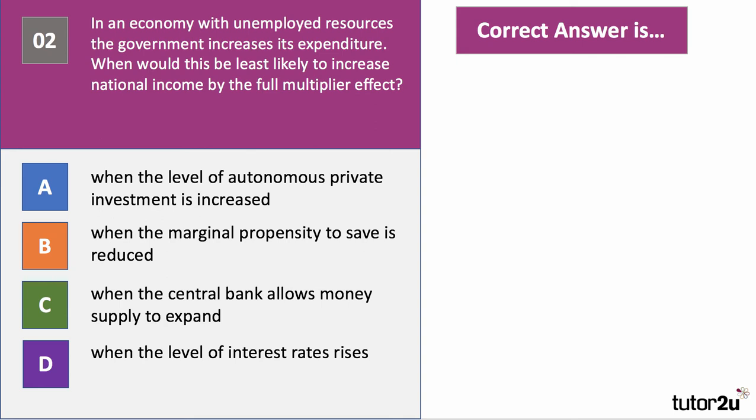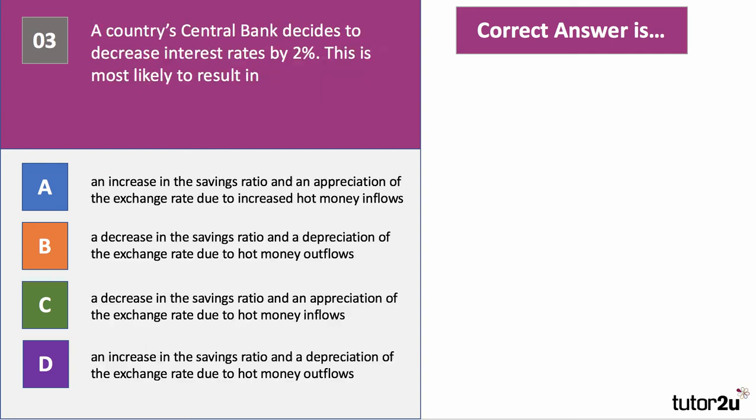This question brings fiscal and monetary policy together. The government has increased its spending, but when will the multiplier effect be muted or reduced? The right answer is D — when the level of interest rates goes up. If interest rates rise, we'd expect the marginal propensity to save to go up, and given that the multiplier is one divided by the propensity to withdraw from the circular flow, if the savings rate goes up, the multiplier effect will go down.